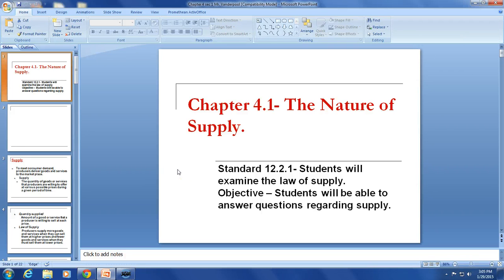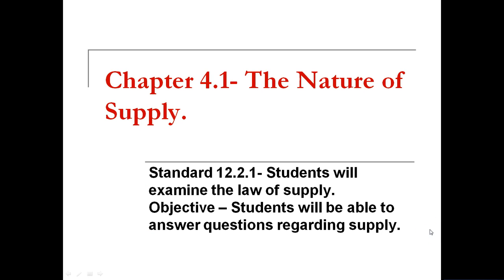Hello ladies and gentlemen. Today we're going to be talking about chapter 4.1, the nature of supply. It's important when we think about supply that we put ourselves in the shoes of a seller — that we think like a seller — because then we realize that sellers want to sell things for high prices. Being able to sell something for a high price provides an incentive for sellers to sell things, and that is an important part of the nature of supply.